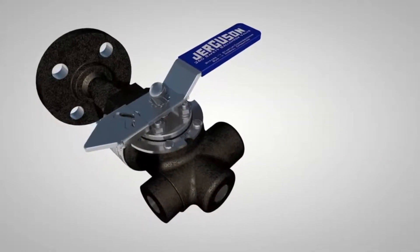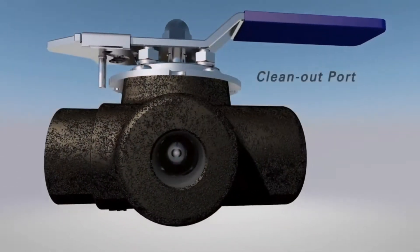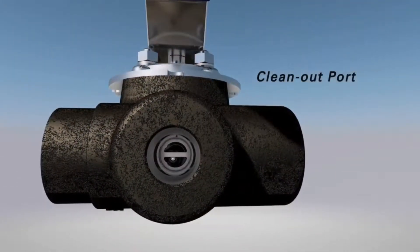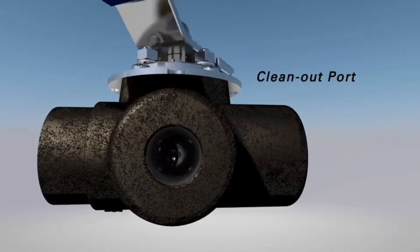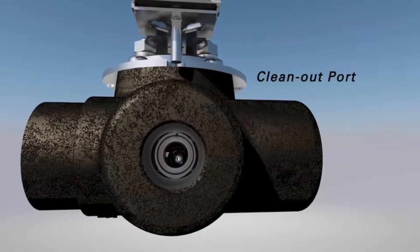The robust body is rated to 900 pound pressure class. A clean-out port opposite the vessel connection allows for quick inspection of the valve internals or may be used as a flushing point for online maintenance in dirty service.